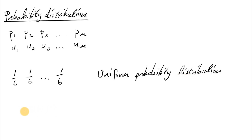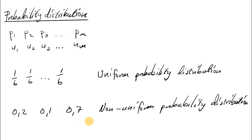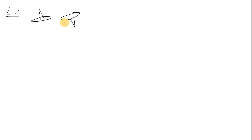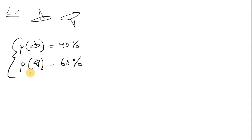If not all probabilities are equal — for example, if you have three probabilities that are not equal — then it's called a non-uniform probability distribution. For example, if we throw a pin, we can get pin up or pin down. Assume the probability of getting pin up is 40% and pin down is 60%. That's an example of a non-uniform probability distribution.